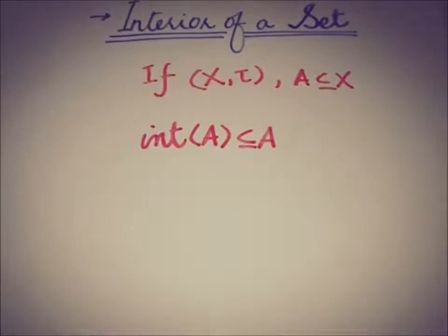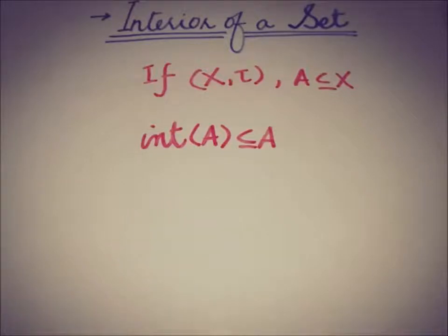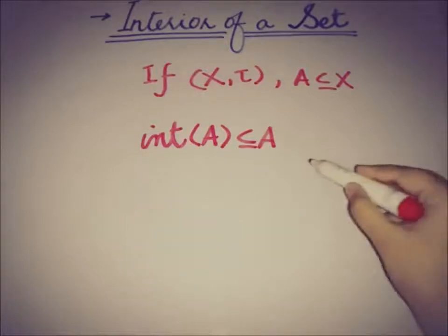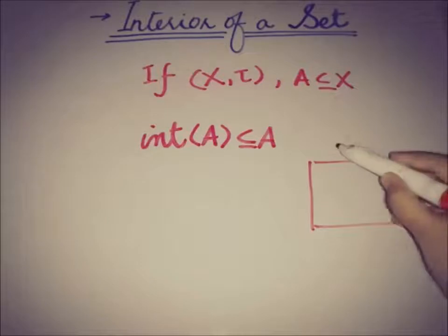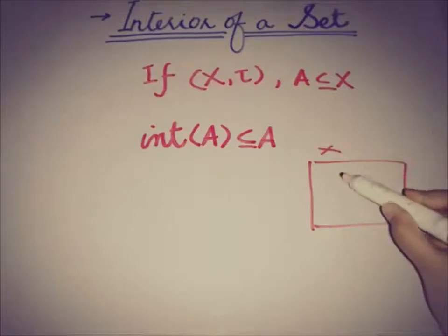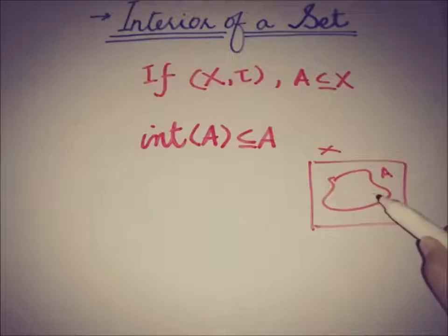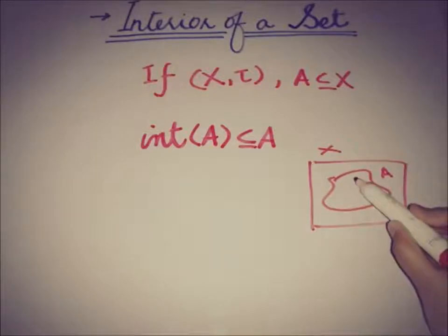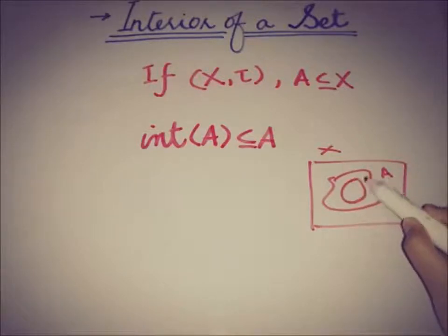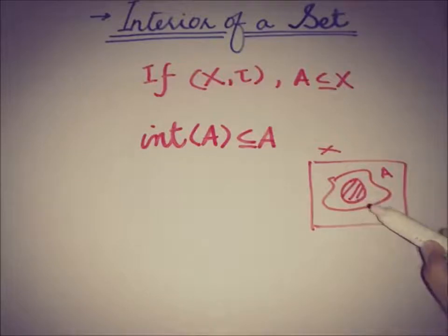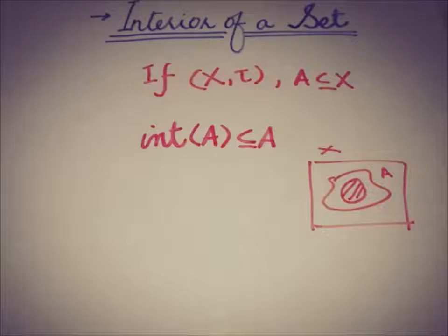If X is a topological space and A is a random subset of X, then the containment idea is that the interior of A is a subset of A. If this is space X and this is the random set A, what we have to prove is that the interior of A — shown as the circle — is a subset of A.